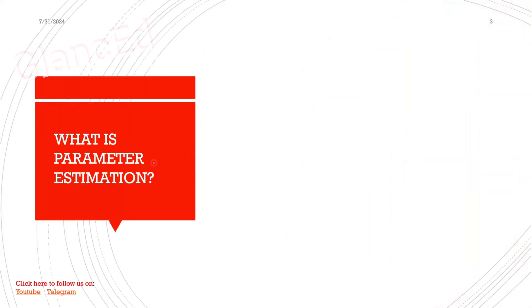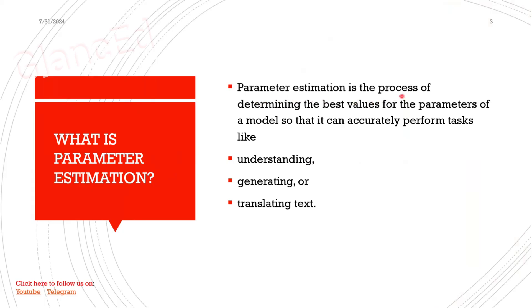Now let's see what is parameter estimation. If you know what a parameter is, then parameter estimation is nothing but giving the best values to the parameters. It is the process of determining the best values for the parameters of a model so it can accurately perform tasks such as understanding text, generating text, and translating text.